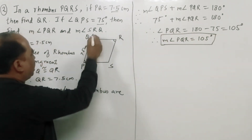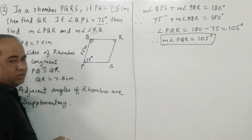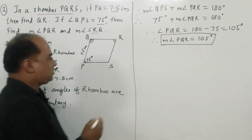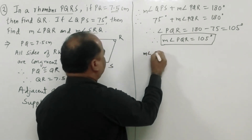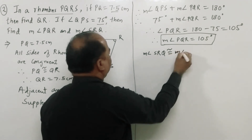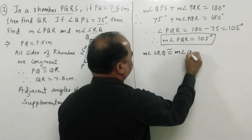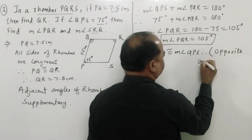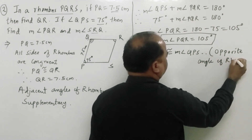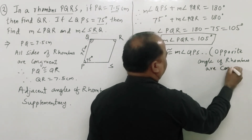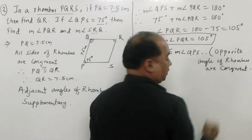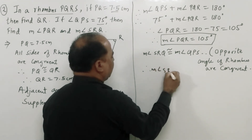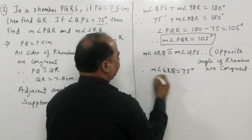Now we have to find measure of angle SRQ. By the property of rhombus, opposite angles of a rhombus are congruent. Measure of angle SRQ is congruent to measure of angle QPS. Since angle QPS is 75 degrees, therefore measure of angle SRQ is equal to 75 degrees.